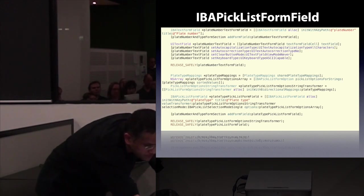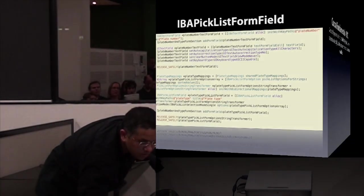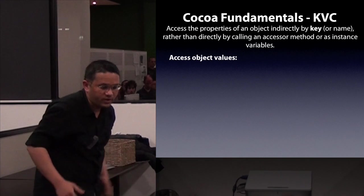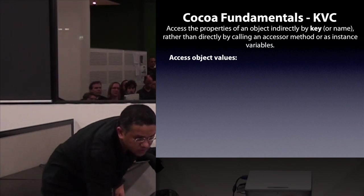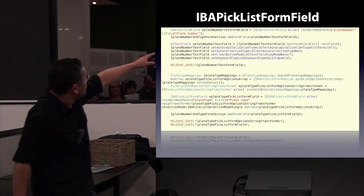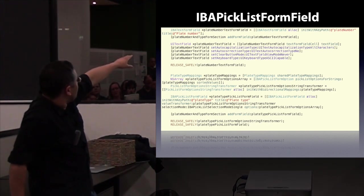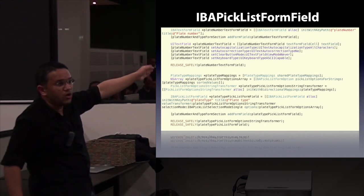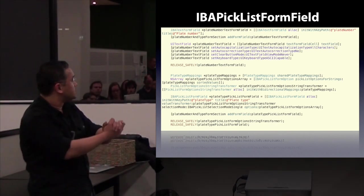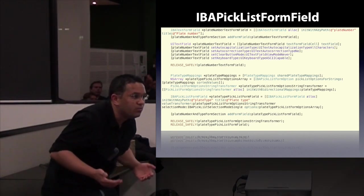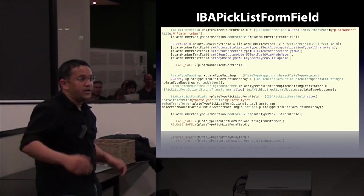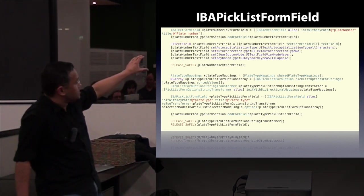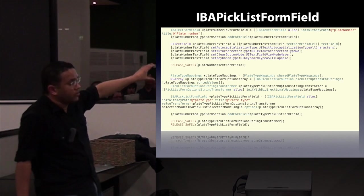I want to explain how IBA Forms uses Cocoa fundamentals like Key Value Coding. When you initialize an IBA form field you specify a key path that comes right out of your model classes. So if I have a model class called Vehicle with properties like type, color, and year manufactured, that's how I'm binding my model classes to the UI — using Key Value Coding.